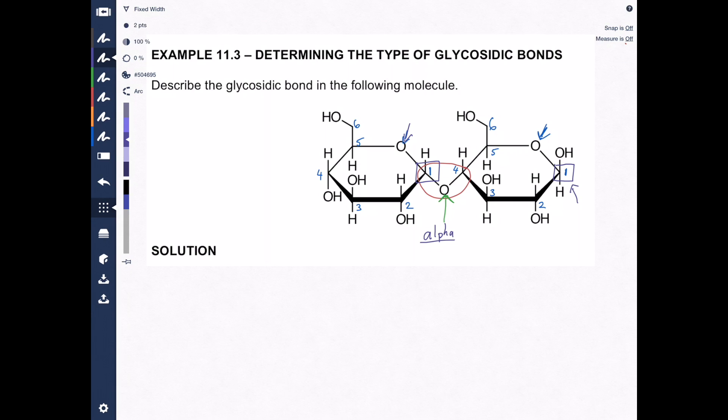And it's between carbon one and carbon four. Carbon number one, carbon number four. So how you would describe this bond is alpha-1,4-glycosidic bond. That's how you describe it.